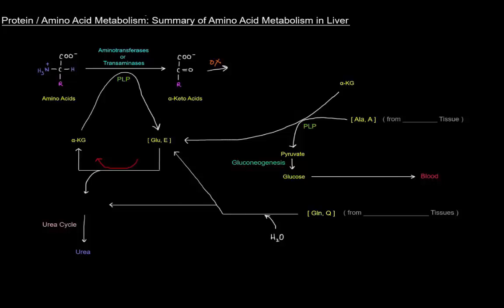Up here to the top right we've got another transamination reaction: the alanine aminotransferase reaction. The amino group attaching to alpha-ketoglutarate to produce glutamate is coming from alanine, and that alanine is coming from muscle tissue. It's specifically alanine aminotransferase catalyzing that reaction.